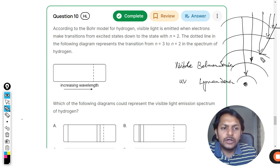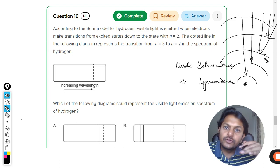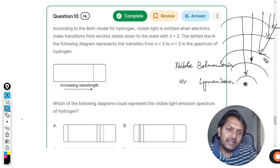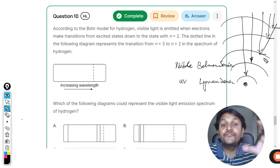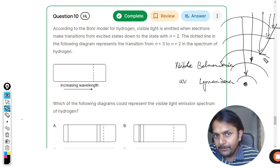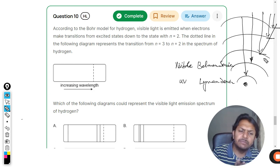These are different names given to different series. In the later series—Paschen, Brackett, and Pfund—infrared radiation is produced in all of them. This is extra information you can look at.